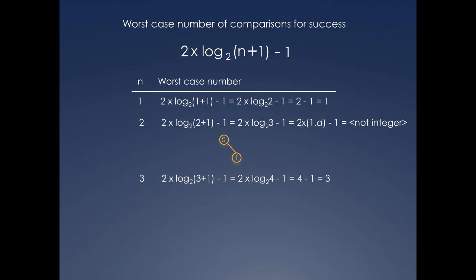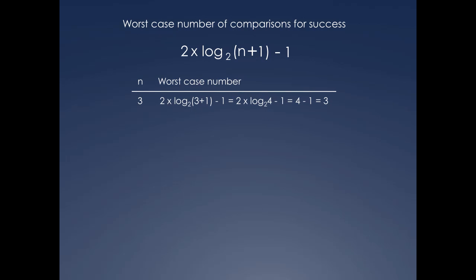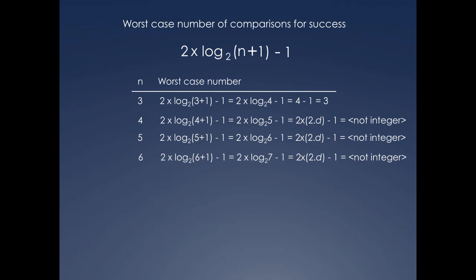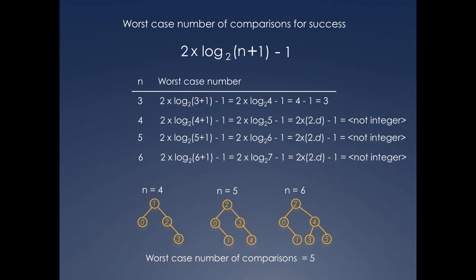Now let's look at the values of n between 3 and 7. For n equals 4, the log of 5 to the base 2 gives a real number value between 2 and 3. The same thing happens with n equals 5 and 6, with the log being 2.something. If we look at the comparison trees for 4, 5, and 6, we see that while they have different shapes, they all have the same height, and the worst case number of comparisons is 5 across the board.